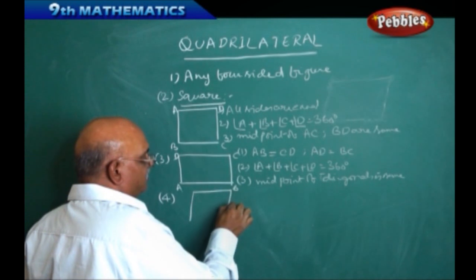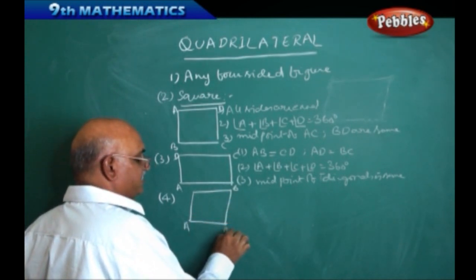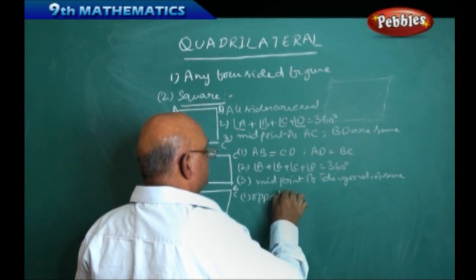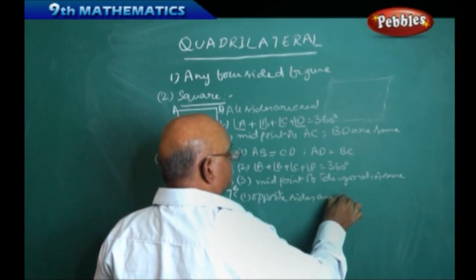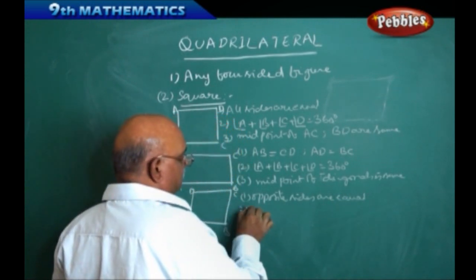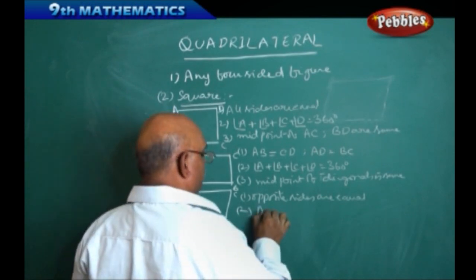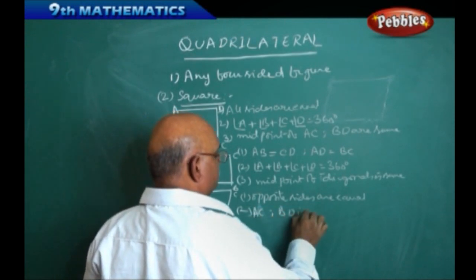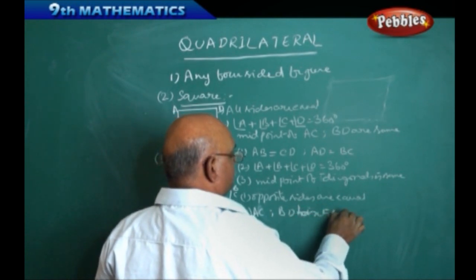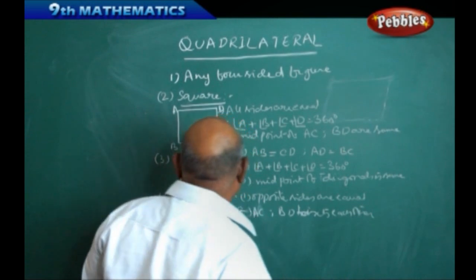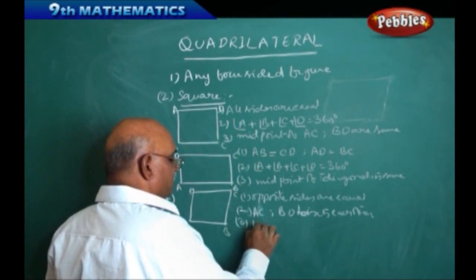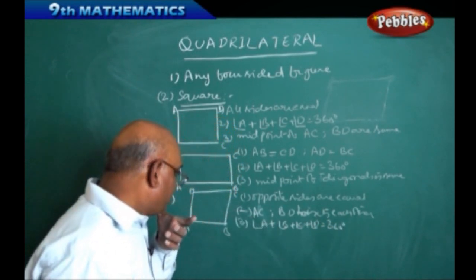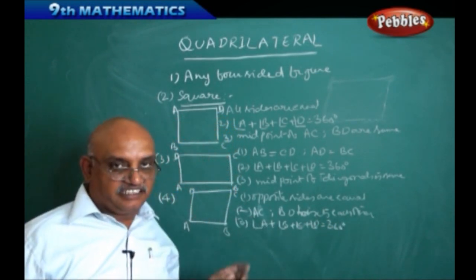In a parallelogram ABCD, opposite sides are equal. The diagonals AC and BD bisect each other. The sum of the angles — angle A plus angle B plus angle C plus angle D — equals 360 degrees, but each individual angle is not 90 degrees; that point you have to remember.